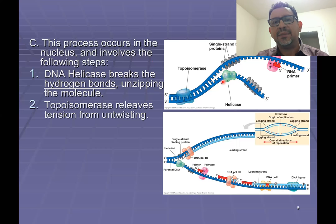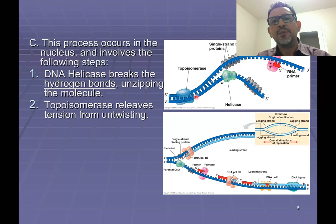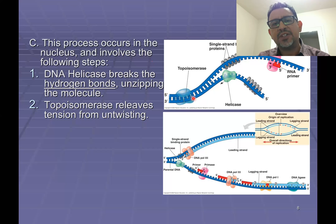This unwinding is going to eventually cause tension away from where helicase is, and this part of DNA will eventually get so tight from all the over-twisting, and what we need now is to relieve that tension. The enzyme that's going to be responsible for this is known as topoisomerase. Topoisomerase makes a cut in the DNA and then allows the strands to swivel and untwist, relieving that tension.